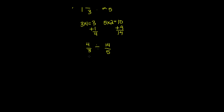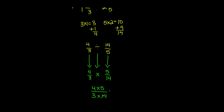Now we have a normal fraction division problem. We use the same method: keep the first fraction as it is, so four over three stays as four over three. Then change the division symbol into a multiplication symbol. Finally, flip the second fraction, so fourteen over five becomes five over fourteen.